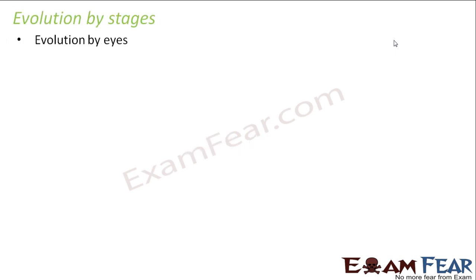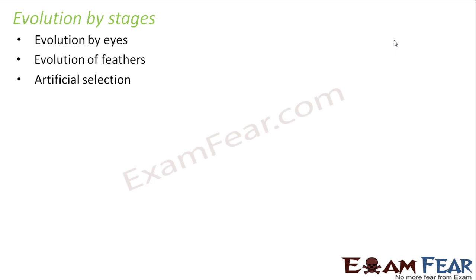We will talk about evolution of eyes, evolution of feathers, and artificial selection. These are some of the evolutionary changes which actually brought about a huge change in organisms. So let us first talk about the evolution of eyes.